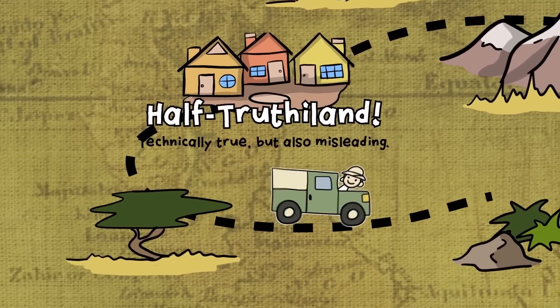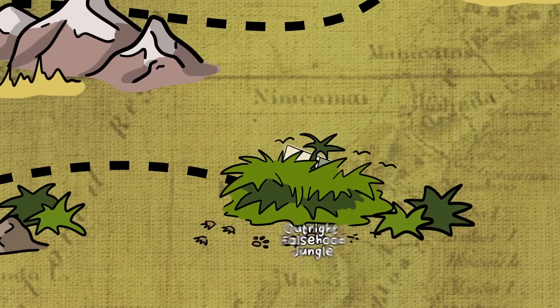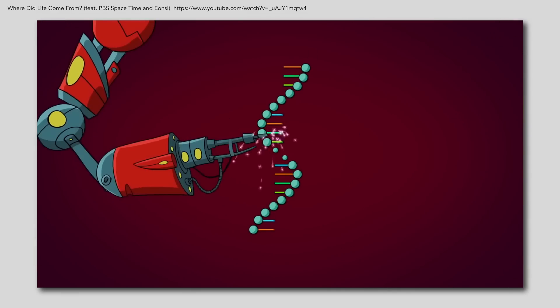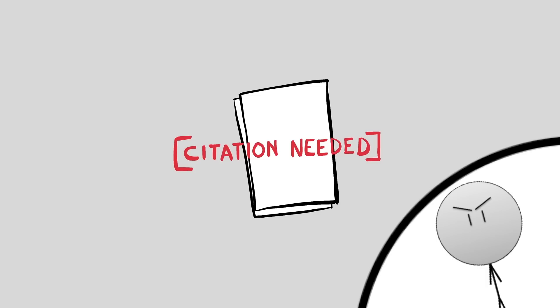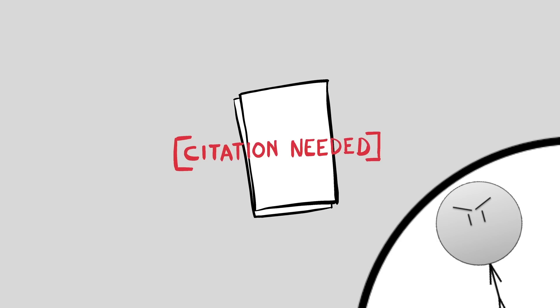Half-truths are one thing, but let's go deeper now — beyond Half-Truth-O-Land — to find claims so exaggerated and so far removed from reality that we need to venture into Outright Falsehood Jungle. The creationist claims: 'Scientists have constructed ribozymes that can copy themselves, just like DNA gets copied,' and then says no reference was provided because this flat-out isn't true. What are you talking about? A reference was provided — multiple references, actually. One of the cited papers, titled 'The Origins of the RNA World,' talks about the creation of ribozymes in laboratories, and the paper itself cites multiple other experiments. I'm not sure what you're trying to gain by lying to your audience — something you yourself criticized in this exact video. Hypocrites be hypocrites.